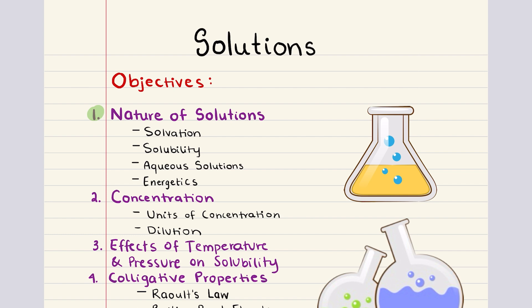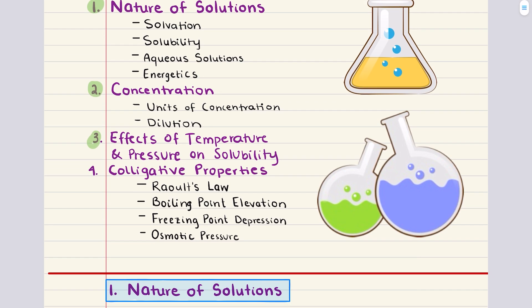These foundational concepts are really important for understanding how substances interact and dissolve in solvents. Then our second objective discusses concentration. Here we're going to learn about different units of concentration like molarity and molality and we're also going to discuss the process of dilution and its practical applications. Then our third objective explores the effects of temperature and pressure on solubility. And then last but certainly not least, our final objective is going to cover colligative properties.